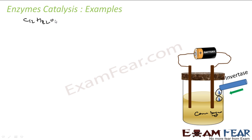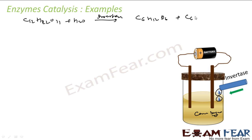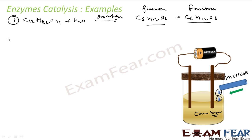C12H22O11 — cane sugar — with some water and the enzyme invertase, what you get is glucose and fructose. This is one good example of enzyme catalysis.